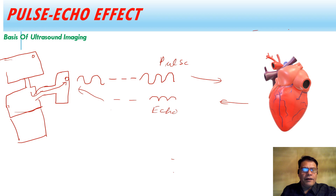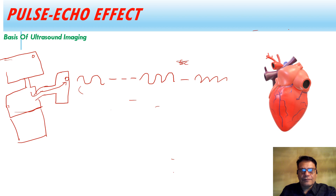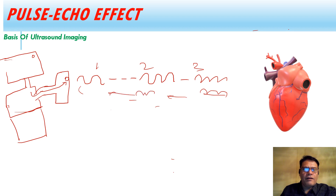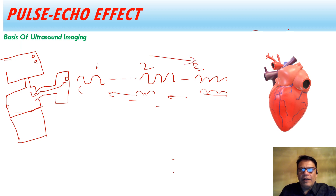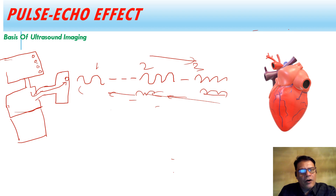This process keeps on going — when it receives an echo it produces a second pulse, then a third pulse. We keep receiving echoes in the form of dots on the monitor. Millions of pulses are emitted and millions of echoes are received, making millions of bright vertical dots on the monitor. This was from only one crystal.